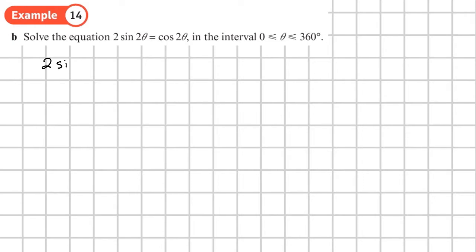So we've got 2 sine 2 theta is equal to cos 2 theta. Now, I may notice on this one that if I divide both sides by cos, I'll get sine over cos. So maybe I can use tan.